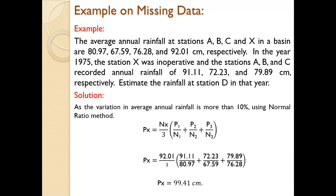Now we'll discuss this with the help of an example. The average annual rainfall at stations A, B, C and X in a basin are 80.97, 67.59, 76.28 and 92.01 cm respectively. These are the N values: N1, N2, N3 and Nx. In the year 1975, station X was inoperative and stations A, B and C recorded rainfall of 91.11, 72.23 and 79.89 cm respectively — these are P1, P2 and P3. Estimate the missing rainfall at station X for that year.